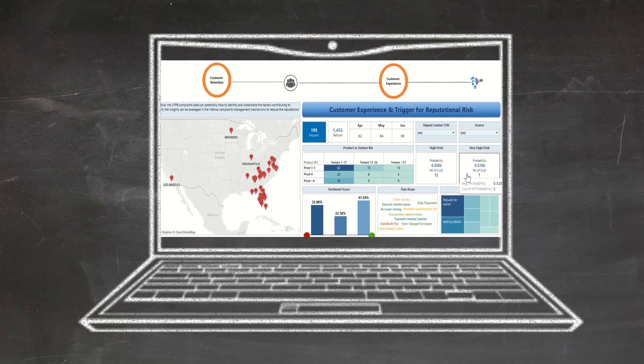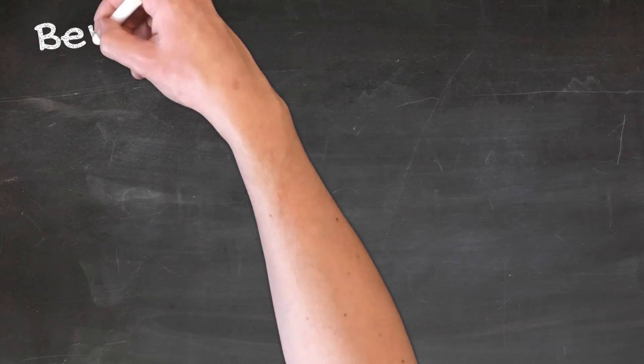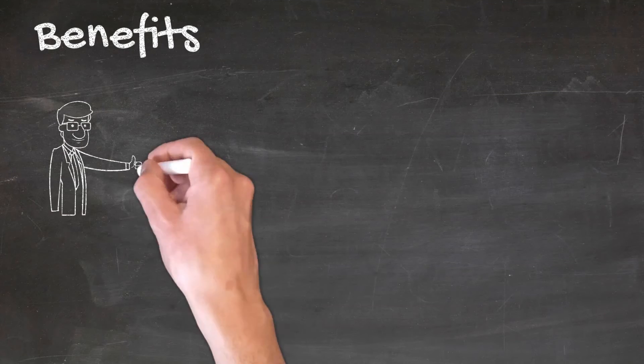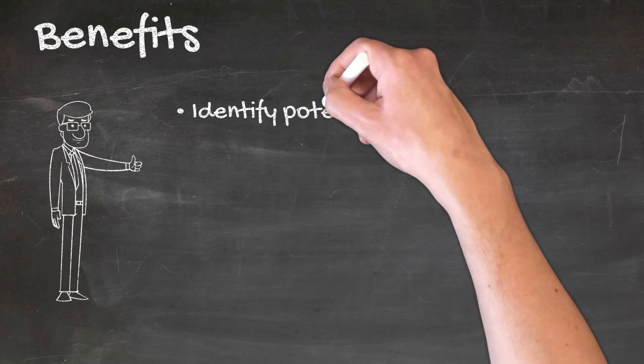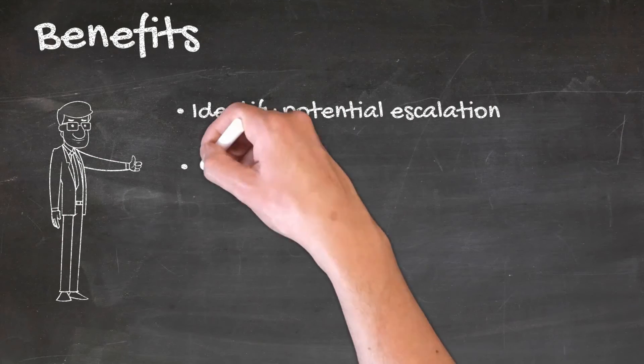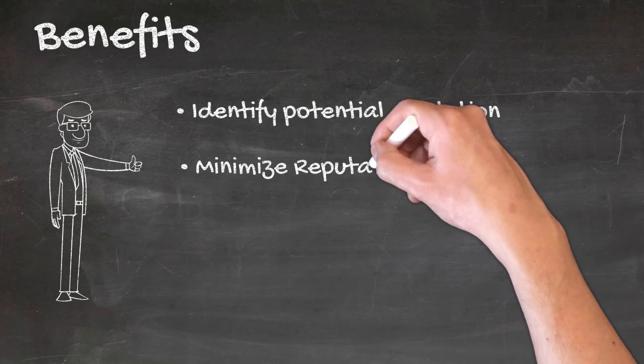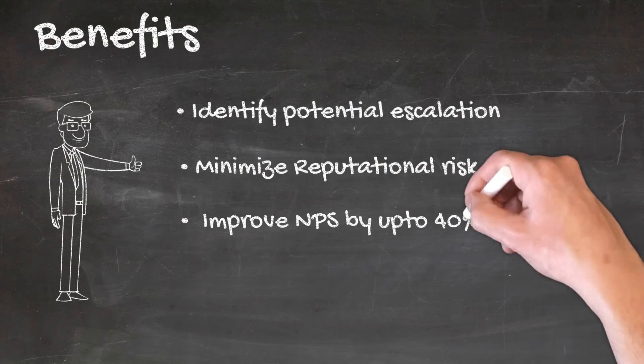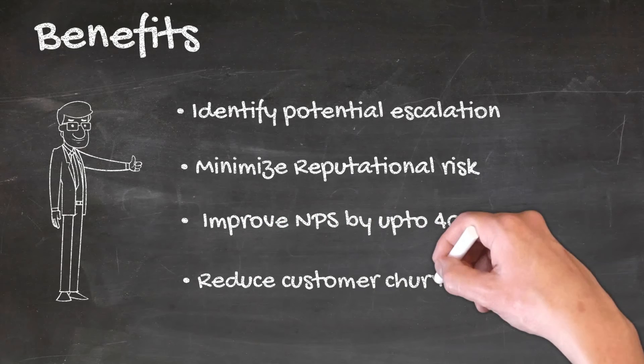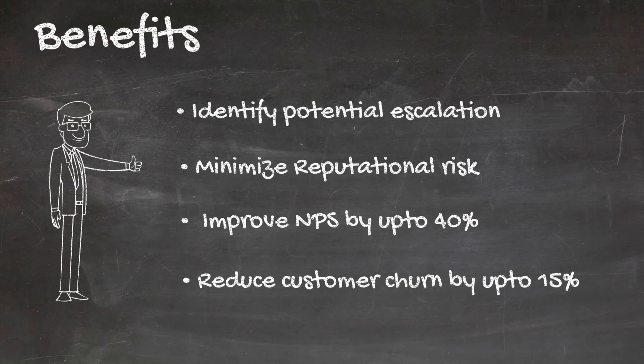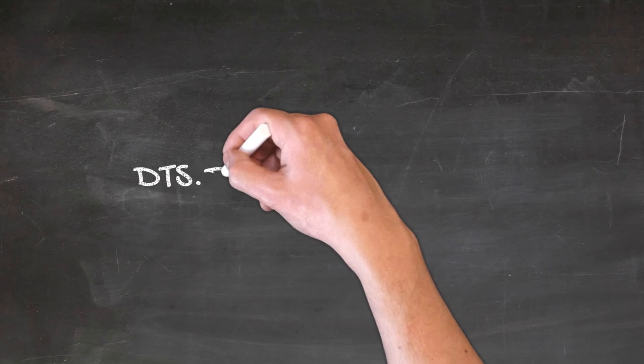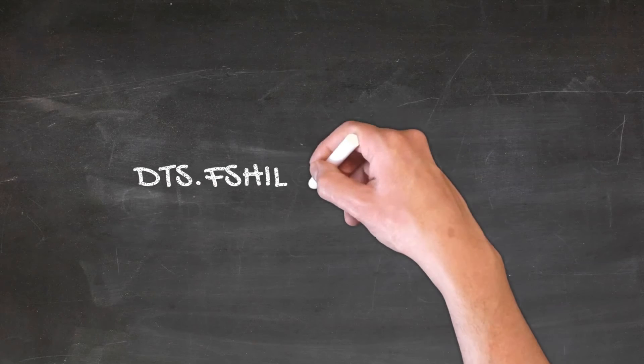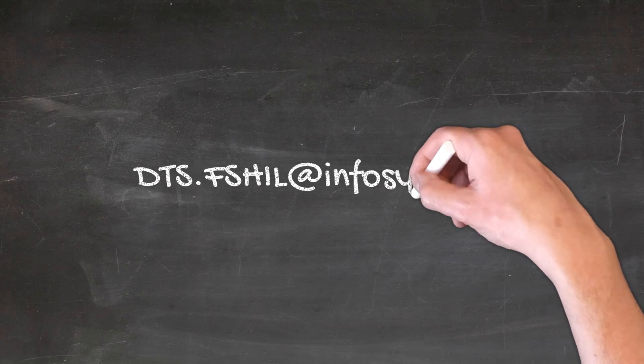Implementing the solution helped John and his team identify potential escalation and reduce reputational risk to the bank, as well as avoid financial penalties, improve NPS by up to 40 percent, and reduce customer churn by up to 15 percent. For more information, contact us at dts.fshil@infosys.com.